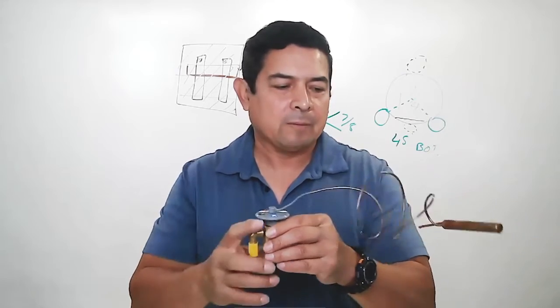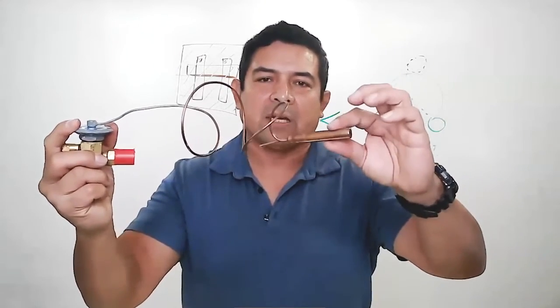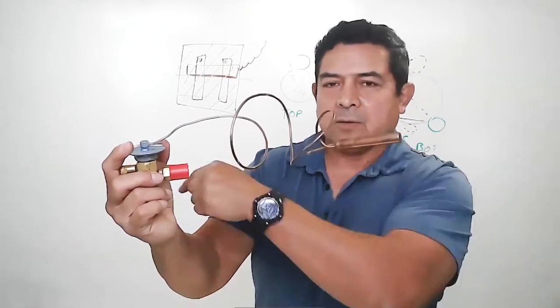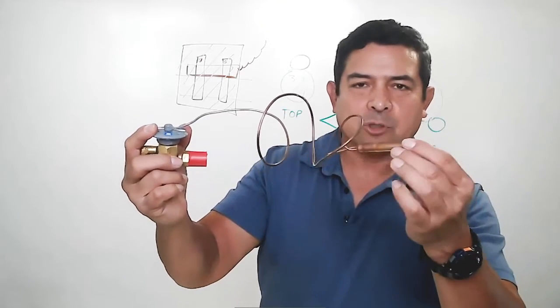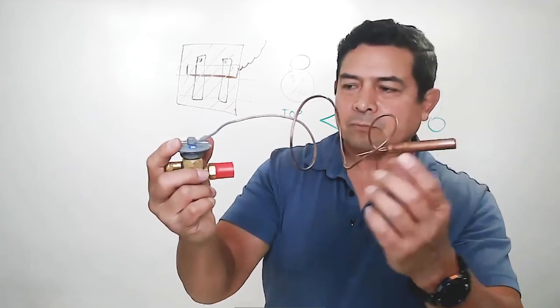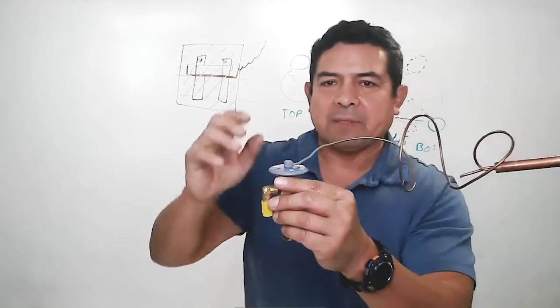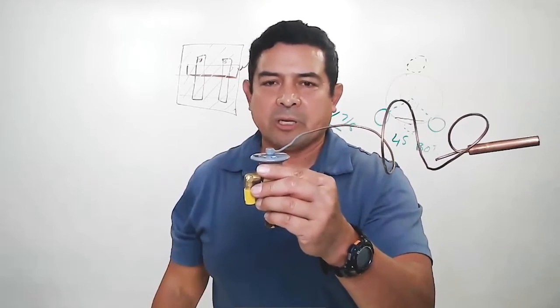Why do you want to take it apart? Because in here, we're going to have some kind of gas or some kind of liquid. Typically, it's the same type of refrigerant that you have in the system. So if this is a 410A system, you may have a couple of drops of 410A in here. You overheat this, the temperature goes up too much, you're going to pop the diaphragm, you're going to break the power head.